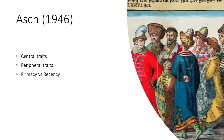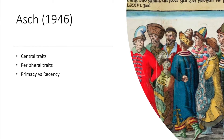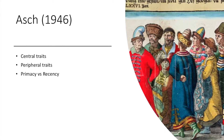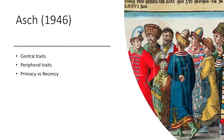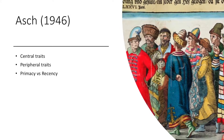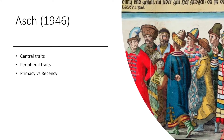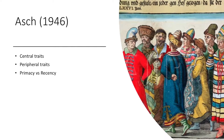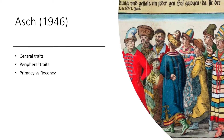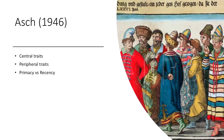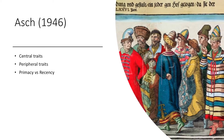Asch in 1946 discovered that individuals form impressions similar to perceiving physical properties of objects — like a gestalt, a configural holistic system made of separate components. This includes central traits, which are traits that have disproportionate influences on the configuration of final impressions, and peripheral traits, which have insignificant influences on the configuration of the final impression.